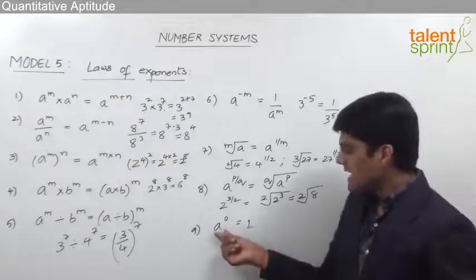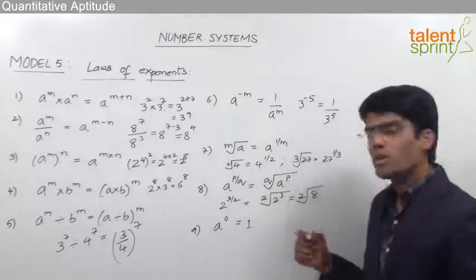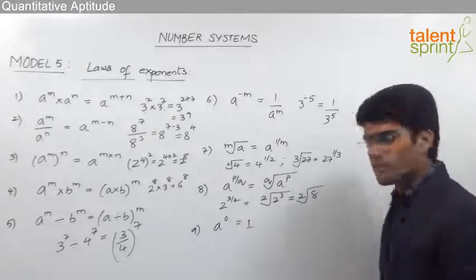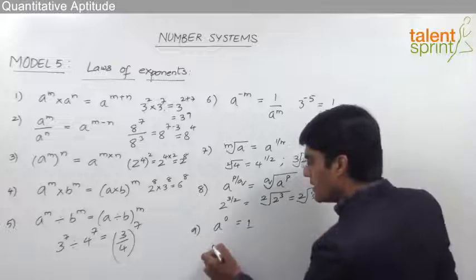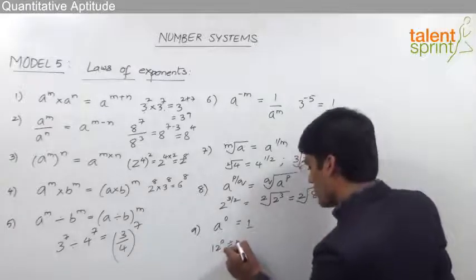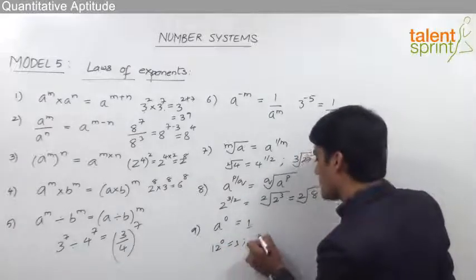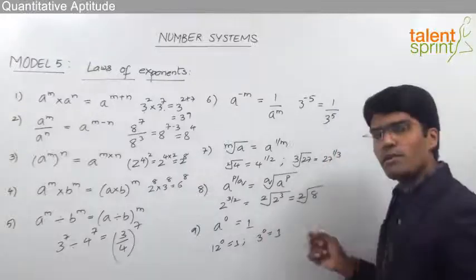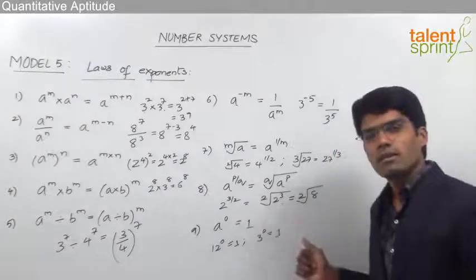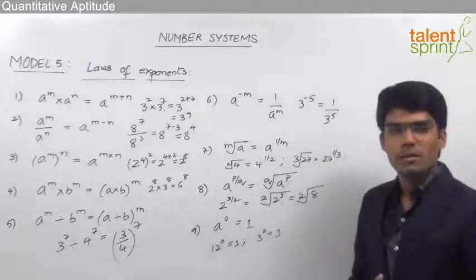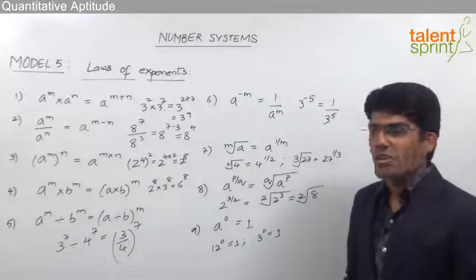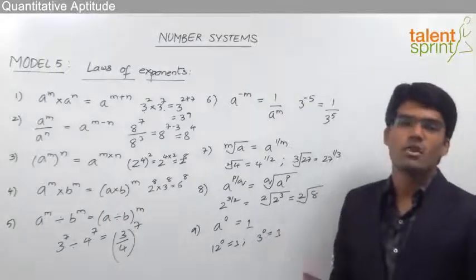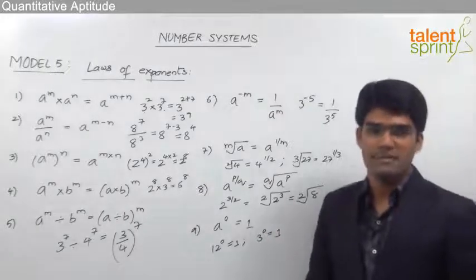The last rule is: a power 0 is equal to 1. Any base raised to the power of 0 will always be equal to 1. For example, 12 to the power of 0 is equal to 1, and 3 to the power of 0 is equal to 1. Whatever the base, when the power is 0, the answer will be equal to 1.